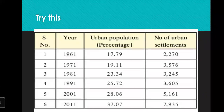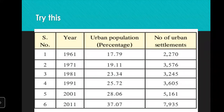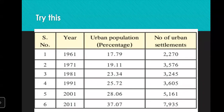On page number 76, there is an activity called 'Try This.' There is a table with years, urban population percentages, and number of urban settlements given. You have to draw a line graph of the percentage of urban population using a computer or freehand. Then discuss the trend of urbanization after studying the graph and write a conclusion about urbanization in our country from 1961 to 2011 in your own words.